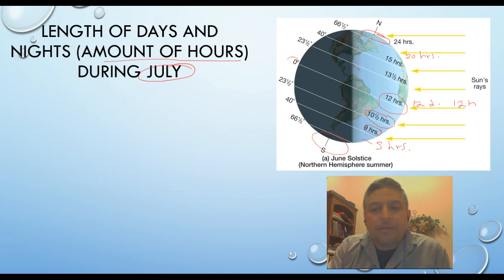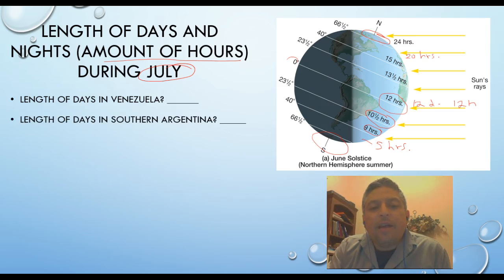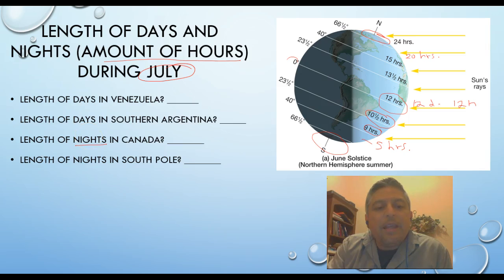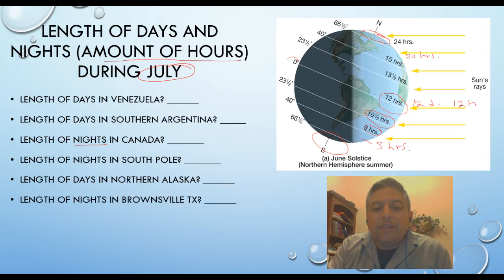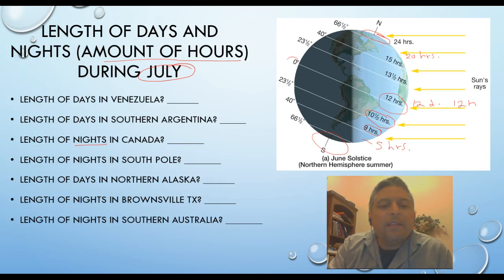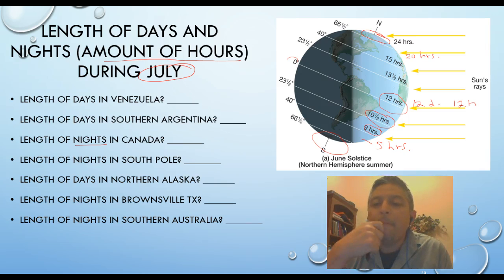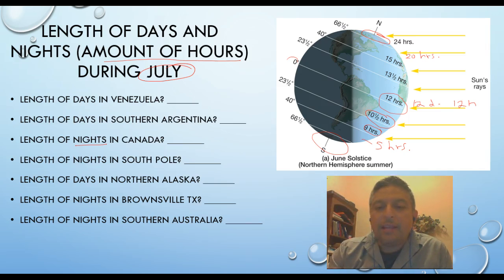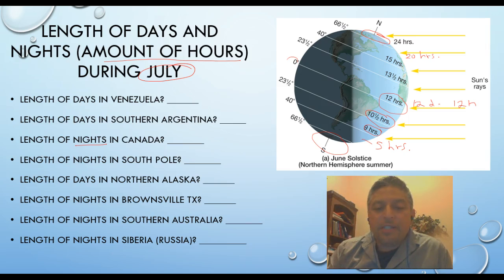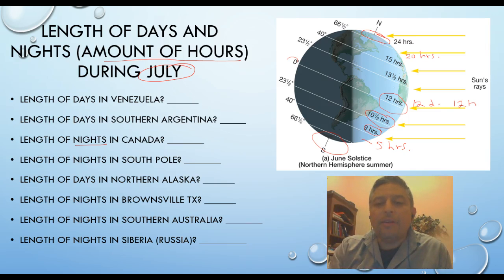So let's answer a couple of the questions. We want to know the length of days in Venezuela, the length of days in southern Argentina, the length of nights in Canada, length of nights in the South Pole, length of days in the northern side of Alaska, the length of nights in Brownsville Texas, and the length of nights in southern Australia. Even though Australia is not located in this picture, you can infer because Australia is way south, close to the South Pole but on the other side of the planet.